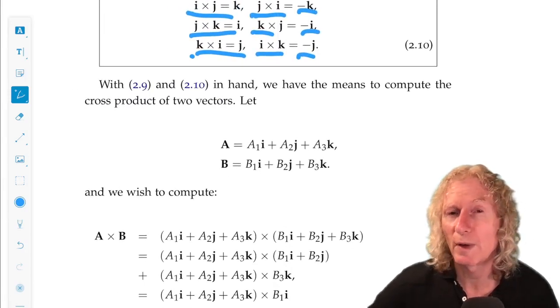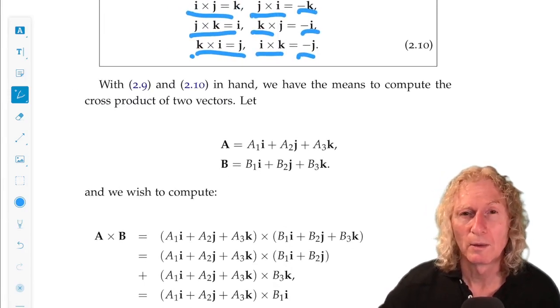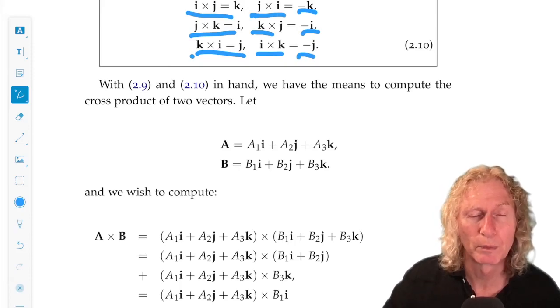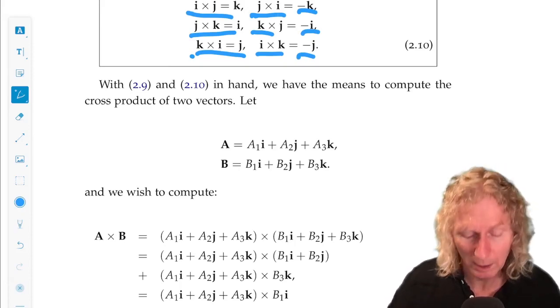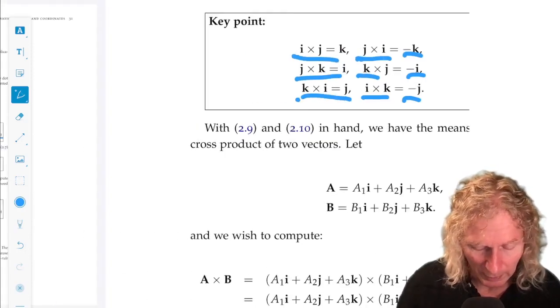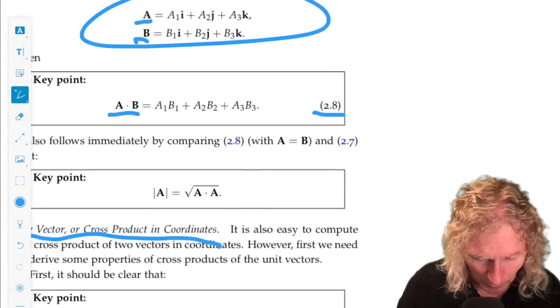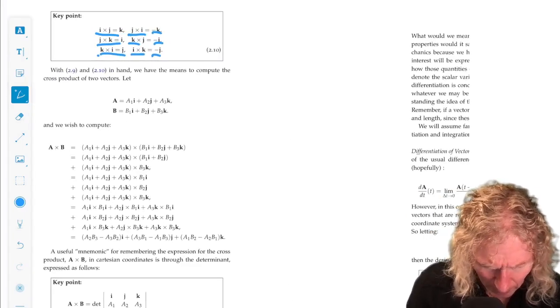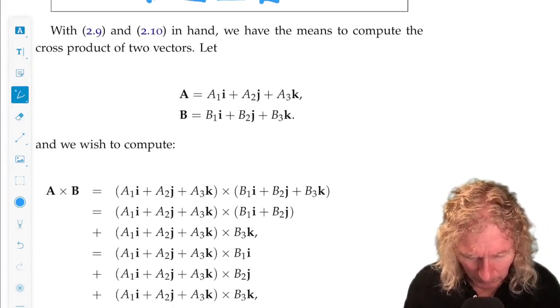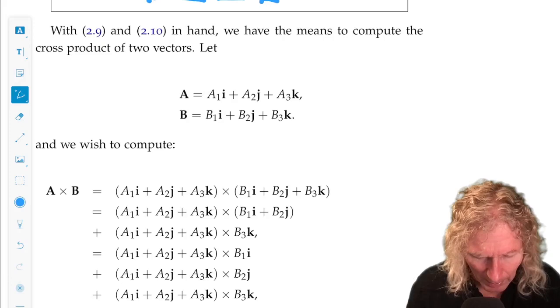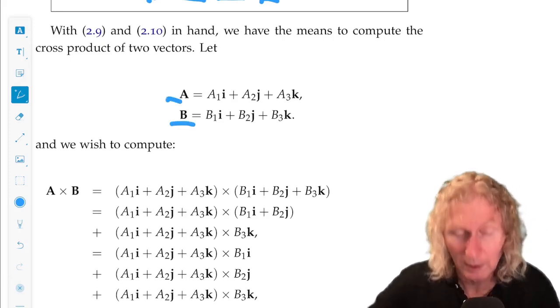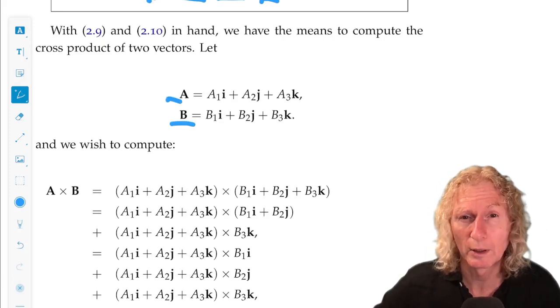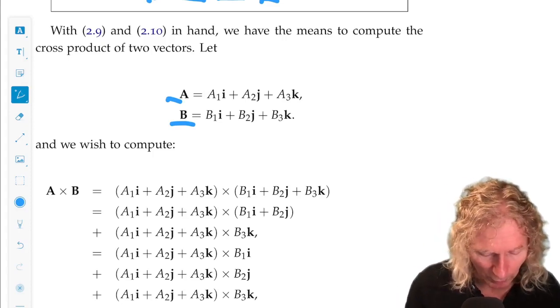Armed with these facts about the cross products of the vectors i, j, and k, we implicitly used those when we computed the dot product, we're going to take A and B represented in the i, j, k coordinate system and compute the cross product.